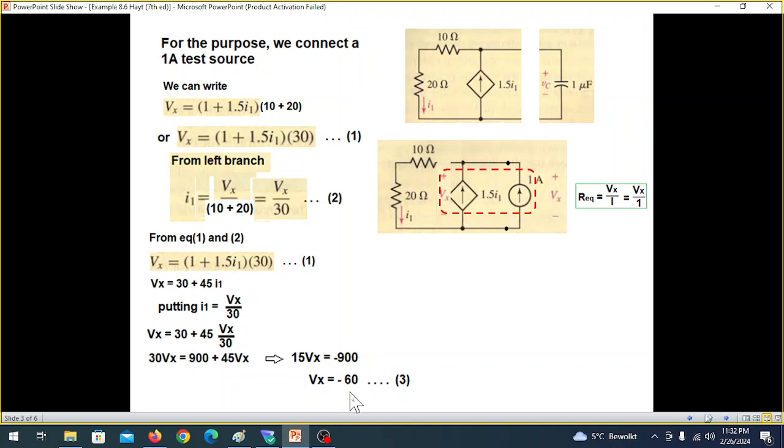That means 15Vx is equal to minus 900. That means Vx is equal to minus 60. So this is our Vx or V Thevenin, we can say.